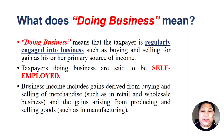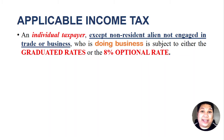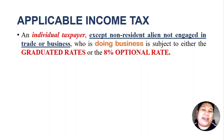Business income includes gains derived from buying and selling of merchandise if you are in retail or wholesale business, and gains arising from producing and selling goods such as in manufacturing. An individual taxpayer, except a non-resident alien engaged in trade or business, who is doing business is subject to either graduated rates or the 8% optional rate.